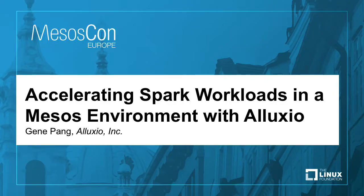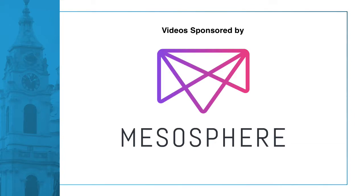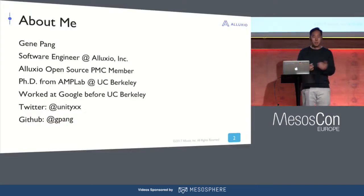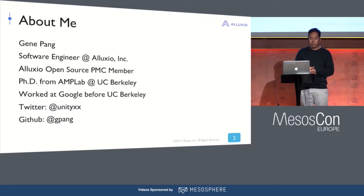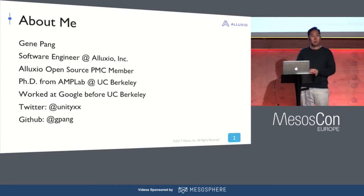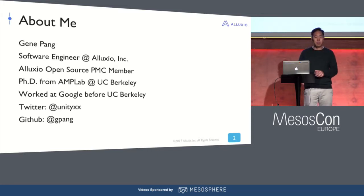Hi everyone. Thank you for coming to this talk. My name is Gene Pang and I'll be talking about accelerating Spark workloads in a Mesos environment with Alluxio. I'm a software engineer at Alluxio and also a PMC member of the Alluxio open-source project. Before Alluxio, I got my PhD from UC Berkeley from the AMP lab, which also produced software like Mesos. Before that I was working at Google with distributed databases and systems.